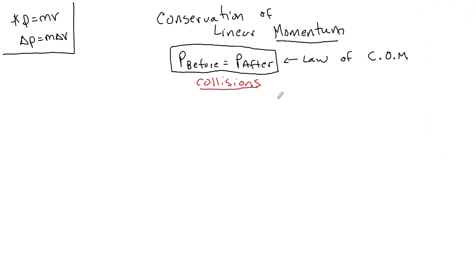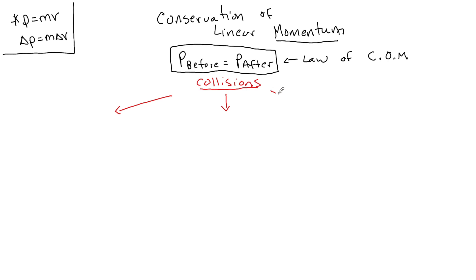Collisions is just the interaction between two or more masses, and we're going to see that there is going to be some conservation of momentum before and after. I want to look at the three types of collisions. Before we do examples, let's talk about the three types of collisions.